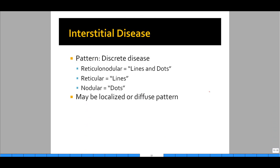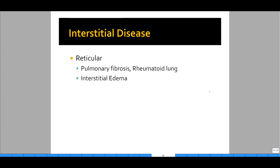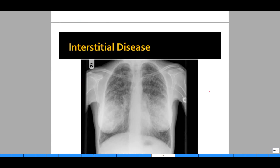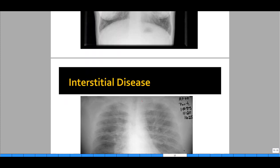Now let's talk about interstitial diseases. Interstitial diseases break up into certain patterns — generally they are discrete, meaning localized to one area of the lung, but they can progress to more diffuse patterns. We break them up into reticular-nodular, meaning lines and dots; reticular, meaning just lines; and nodular, meaning just dots. Reticular interstitial diseases are commonly caused by pulmonary fibrosis, rheumatoid lung, and interstitial edema. What these have in common is that soft tissue is either replaced by collagen or there is a lot of fluid within the soft tissue of the lung, causing diffuse lines on the chest x-ray. Pulmonary fibrosis is a very debilitating disease with poor prognosis.